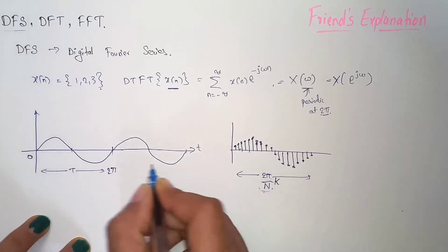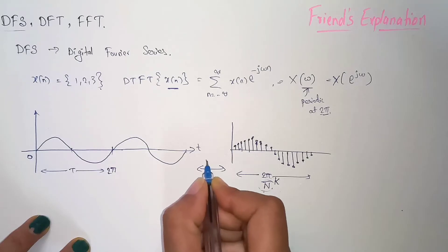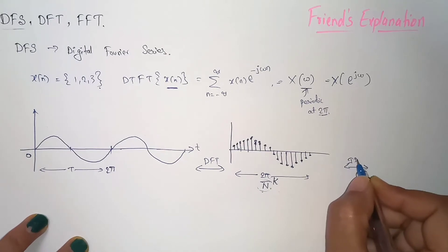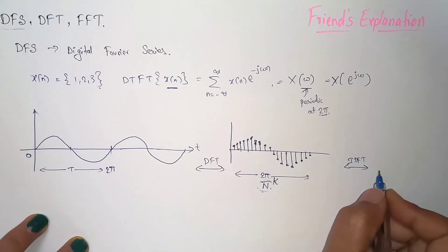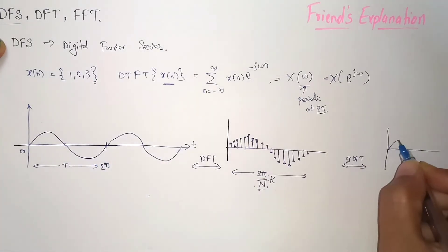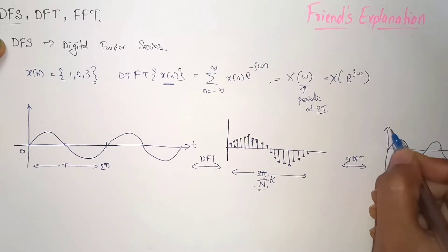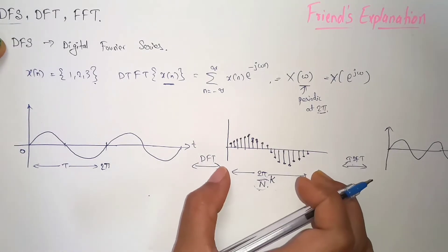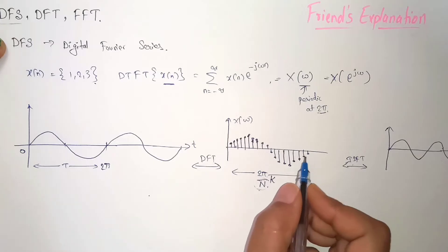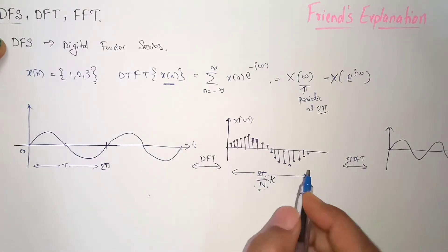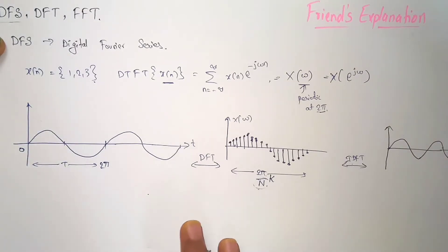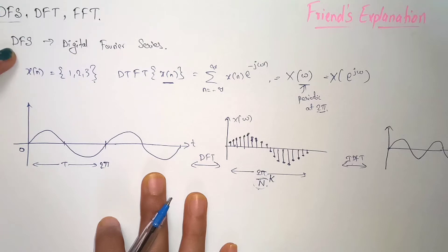Now here we have considered only the 2π window with N samples, so this portion is non-periodic. If we then apply Inverse Discrete Fourier Transform, it will get converted back into a periodic signal — we get the same signal again. So basically, we took discrete samples of the periodic signal, which is why this is called the Discrete Fourier Transform. Now let's discuss the formula for the Discrete Fourier Series.